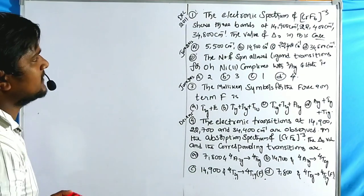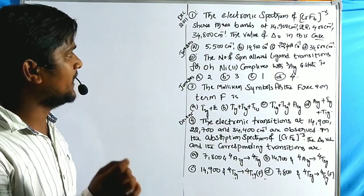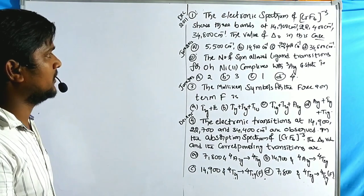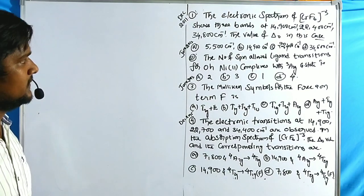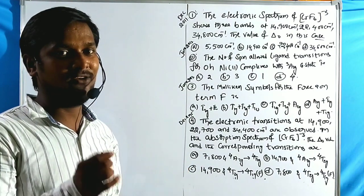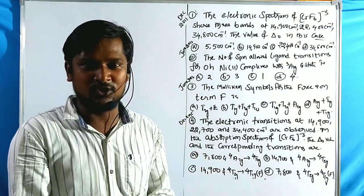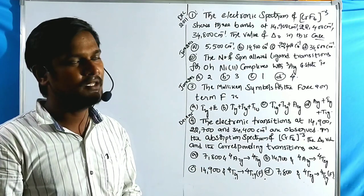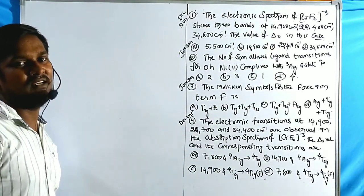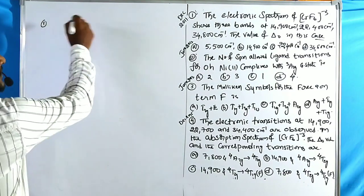The first problem: the electronic spectrum of CrF₆³⁻ shows three bands at 14,900 cm⁻¹, 22,400 cm⁻¹, and 34,800 cm⁻¹. We need to find the value of ΔO. Three transitions are given, so we need to find the crystal field splitting energy value from these.